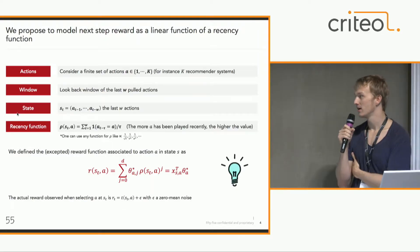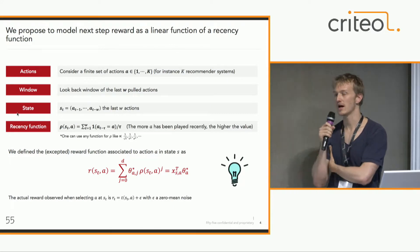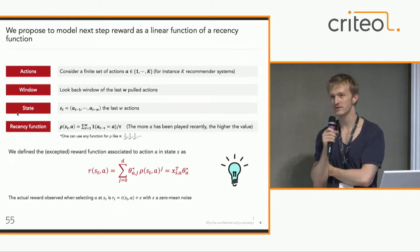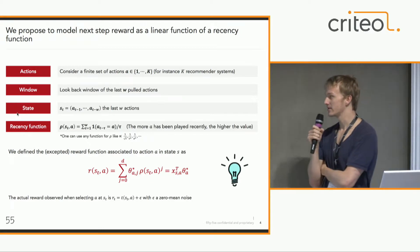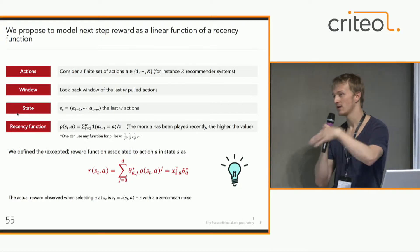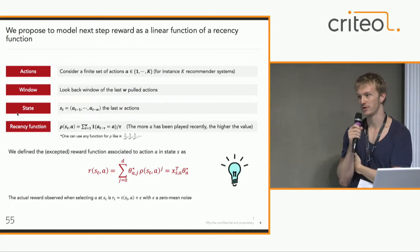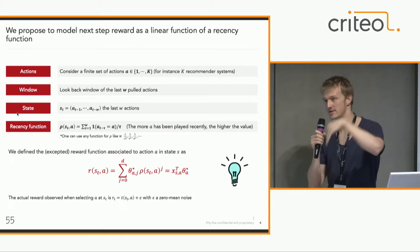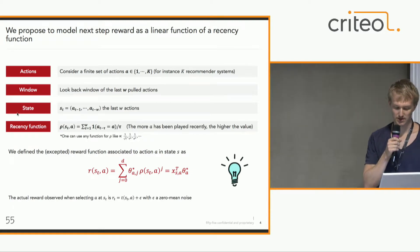So if we have pulled this action a lot in the recent history, we are going to have a high value for the recency function. Based on that, we assume that the reward in a given state for the next action will be a linear combination of different powers of this recency function. For instance, if we take d equal to 1, we only have a linear shape — only increasing or decreasing interest of a user. But if we increase d, we can have more complex shapes, like increasing and then decreasing curiosity for a particular action.